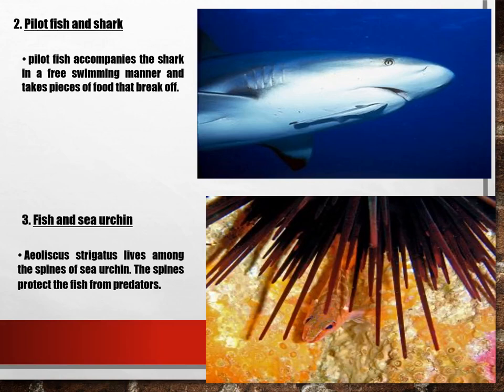Another example of commensalism is fish and sea urchin. The sea urchin has spines, and these spines protect the fish from predators.